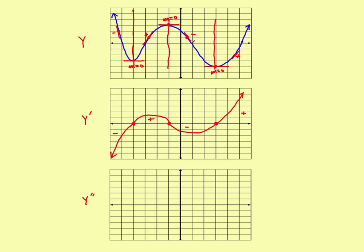Now we want the second derivative. To get it, just repeat the process — pretend the red graph is the original graph, make a quick sketch of its derivative, and you'll have the second derivative of the original function.